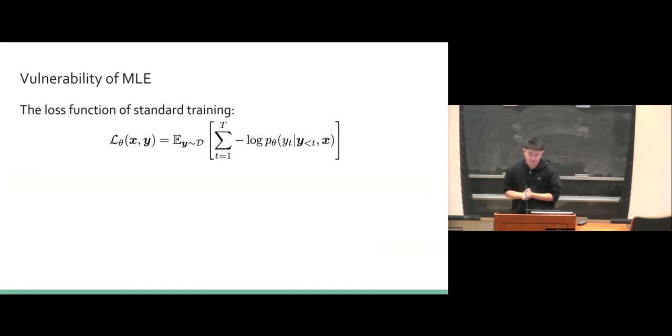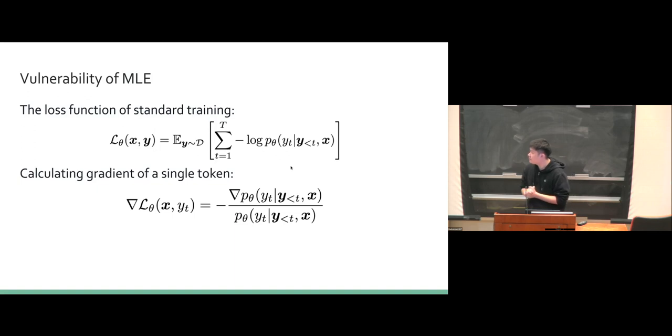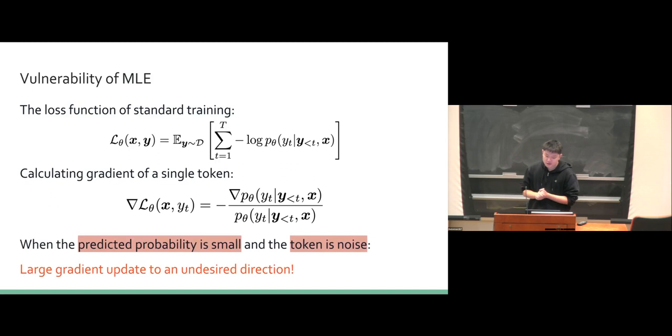We look into this from a theoretical perspective, the vulnerability of maximum likelihood training. The loss function of standard training is just the sum of negative likelihood loss of the individual tokens. If we calculate the gradients with respect to a single token, we can see at the denominator we have the predicted probability, and at the numerator we have the gradient of the predicted probability. This indicates when the predicted probability is small, and also the token is noise, this leads to a large gradient update to an undesired direction. Later we will see that when the predicted probability is small, it does not necessarily indicate that the token is noise.